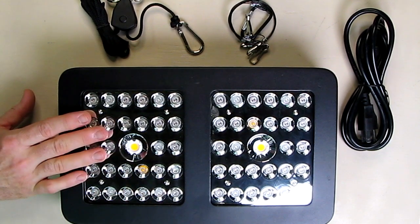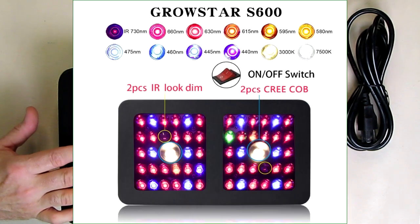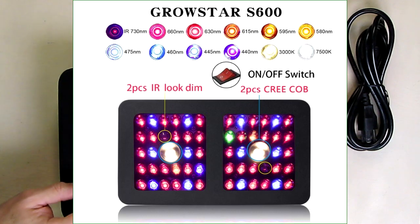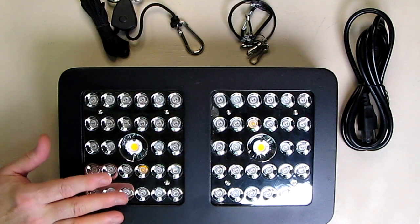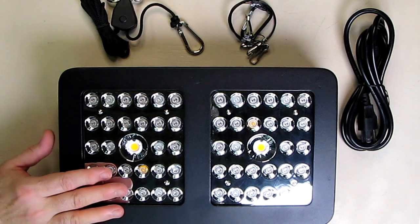This has an optimum full spectrum using these arrays of COB LEDs and it goes from 380 nanometers to 780 nanometers.